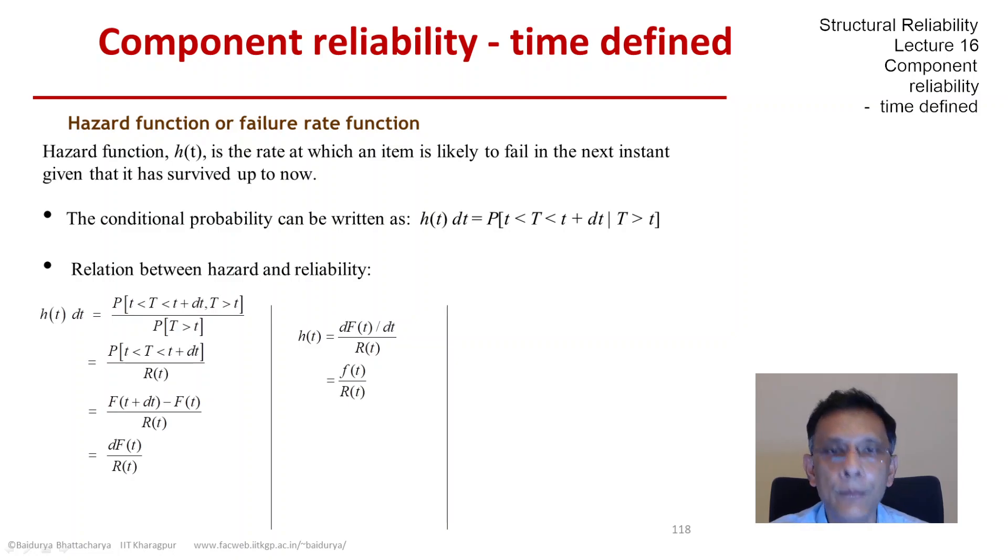The hazard function gives us the same information: how likely the item is to fail in the next instant given that it has survived up to now. Let's see if we can use this relationship to eliminate the PDF and express h in terms of R or R in terms of h. Turns out we can.